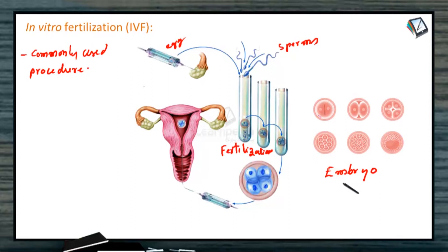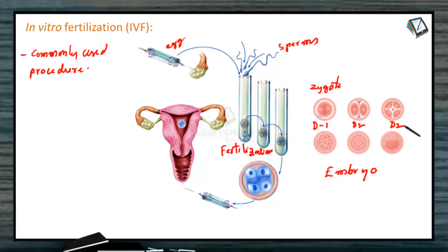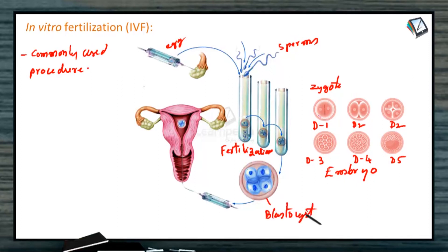You can observe the development stages here: day one is the zygote stage, day two sees the two-cell stage and the four-cell stage, on the third day it reaches the eight-cell stage, on the fourth day it becomes a morula, and on the fifth day it becomes a blastocyst. This blastocyst stage is then implanted in the uterus — this complete process is called in vitro fertilization.